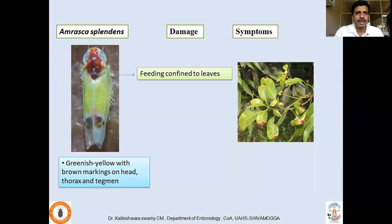The fourth species, Amrasca splendens, mainly infests the leaves and can be identified by its greenish-yellow color with brown markings on the head, thorax, and abdomen. This species infests leaves and we can typically observe tip burning — that is how you can identify the damage caused by Amrasca splendens.